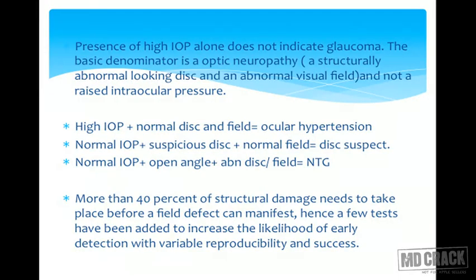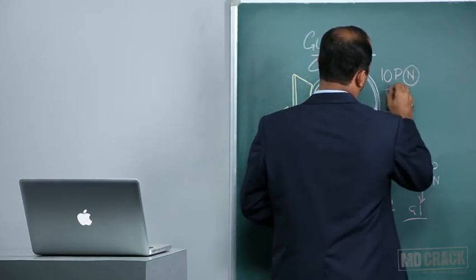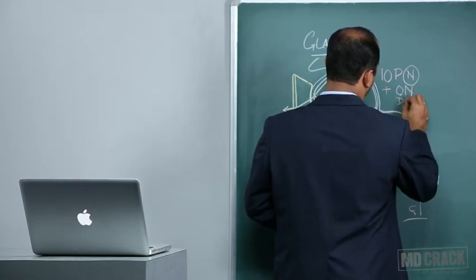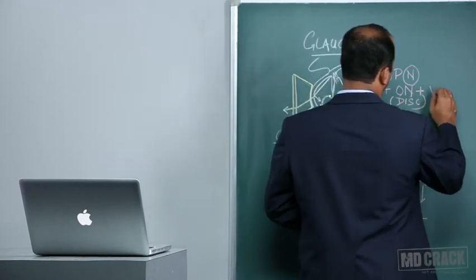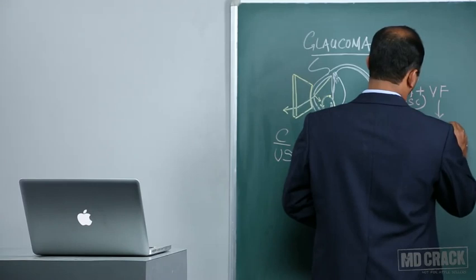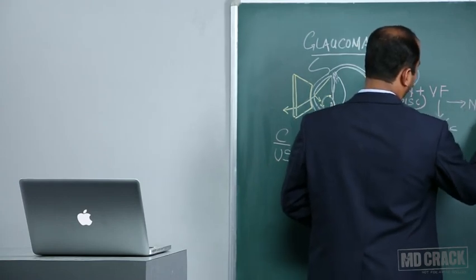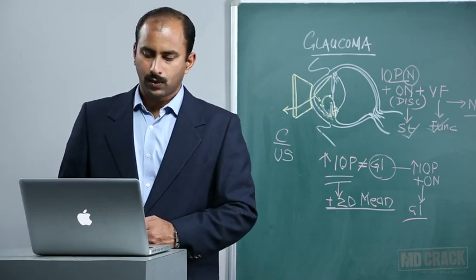Normal intraocular pressure with a suspicious disc and normal visual field is labeled as a disc suspect. Normal intraocular pressure, open angle on gonioscopy, with an abnormal disc and correlating visual field changes is seen in normal tension glaucoma — where IOP is normal at all times throughout the day, but associated optic nerve changes and visual field changes are present. The disc represents the structural defect whereas visual field changes represent the functional defect. If both are present with an open angle and normal IOP, it classifies as normal tension glaucoma.